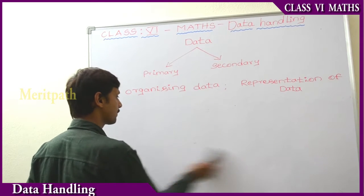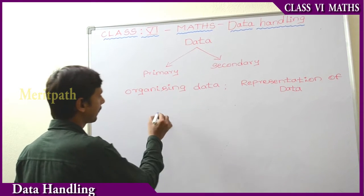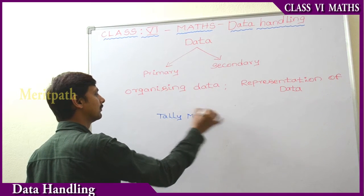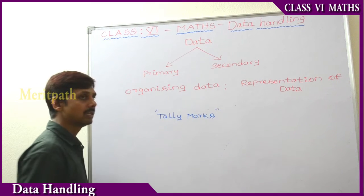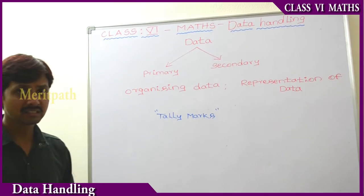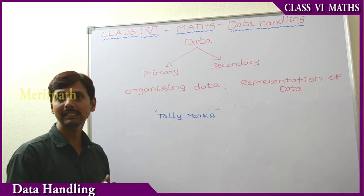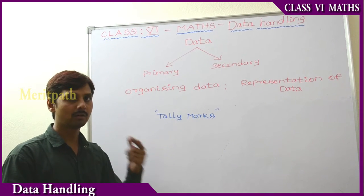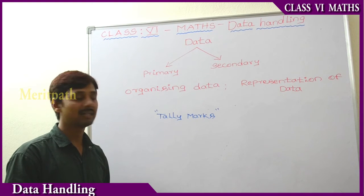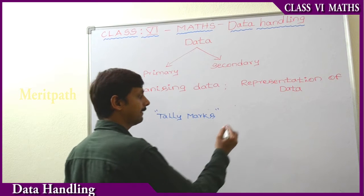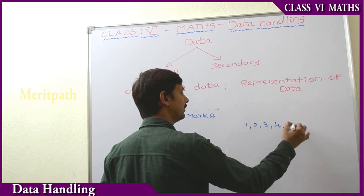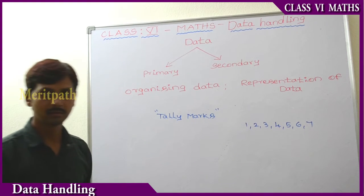Let's go to the next concept: tally marks. To represent data in a particular form, to count the objects or numbers easily in a particular group of data, we use tally marks. For example, we will take some numbers: 1, 2, 3, 4, 5, 6, 7 — and these are the numbers we take.